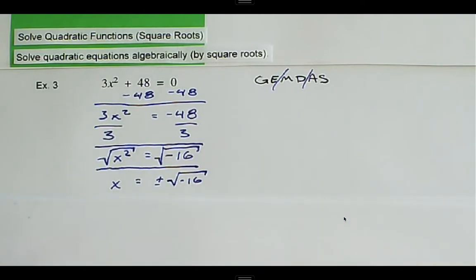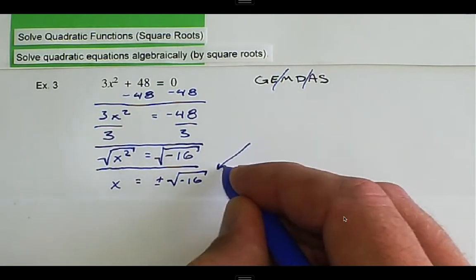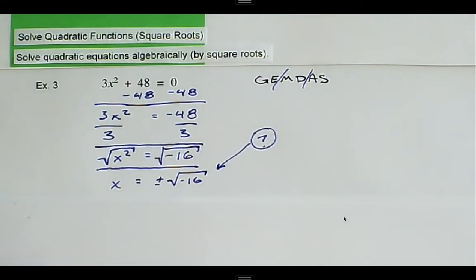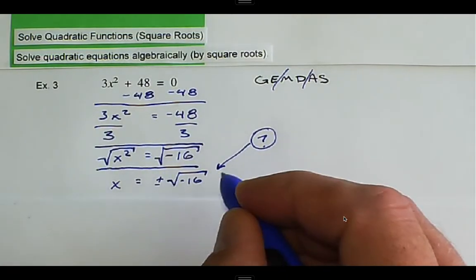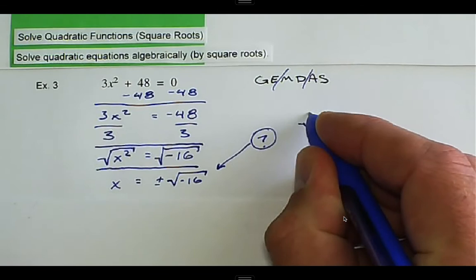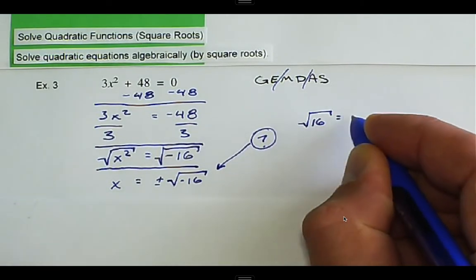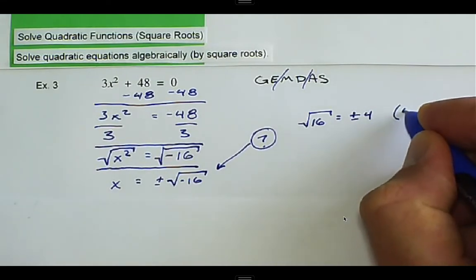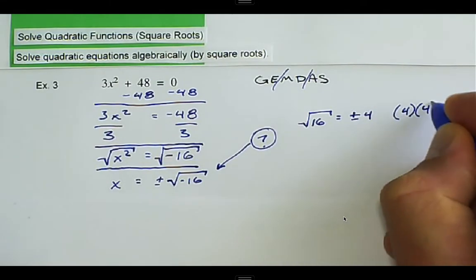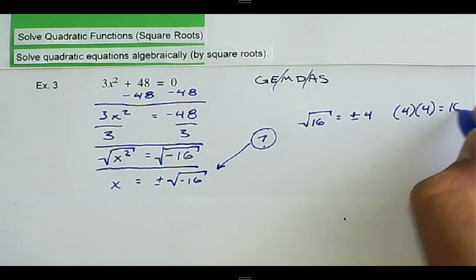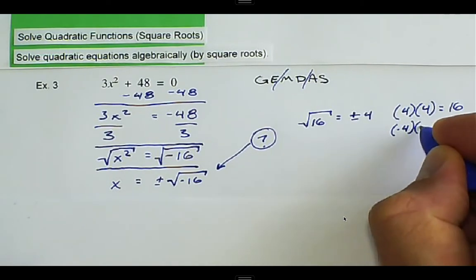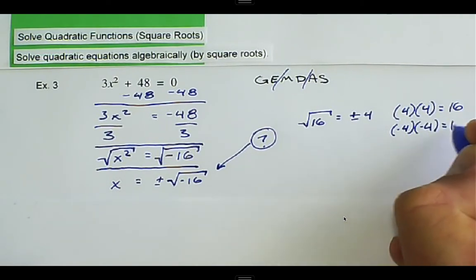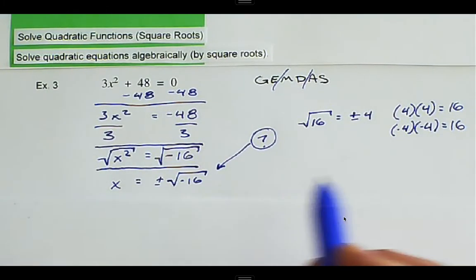Let's think about this. We have a question: what numbers can we multiply together to get negative 16? We know that the square root of 16 is equal to plus or minus 4. We can say 4 times 4 equals 16, or we can say minus 4 times minus 4 equals 16.